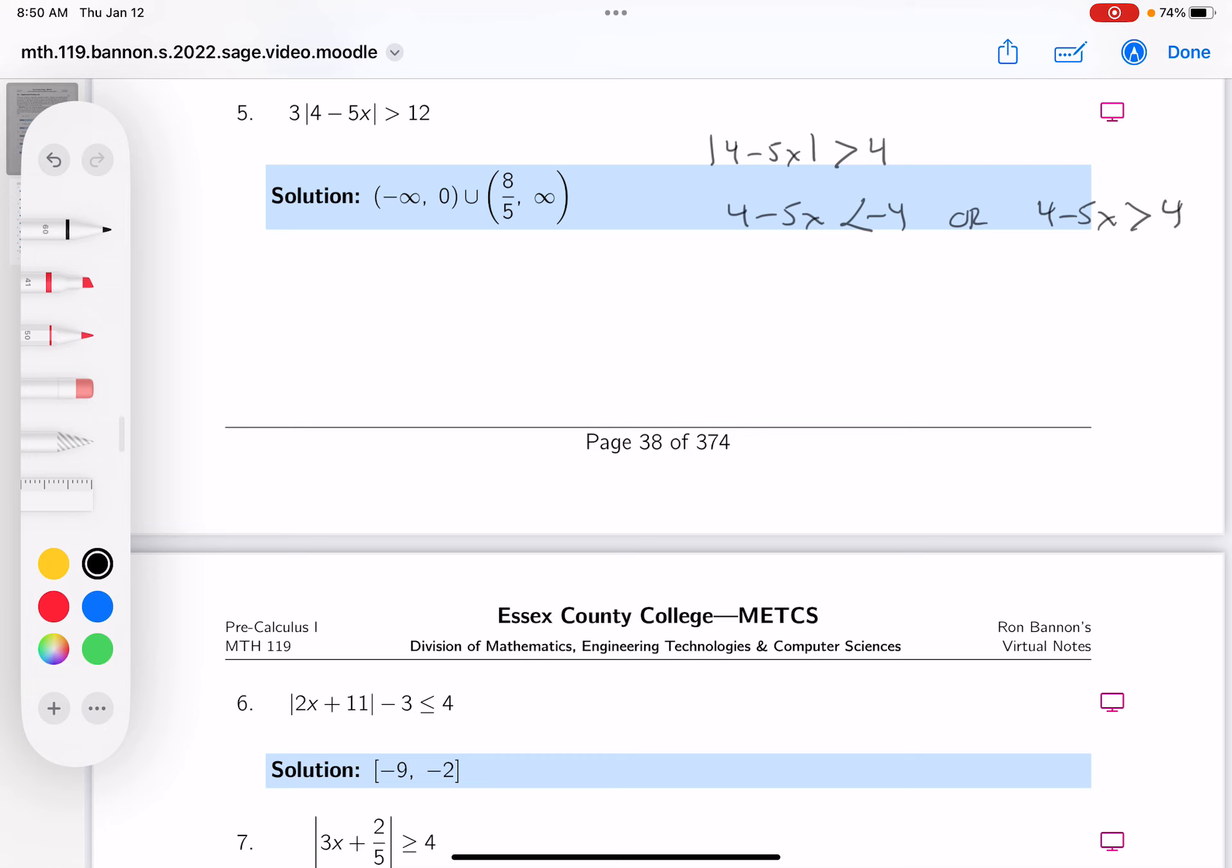These are two inequalities to solve, and solve them one at a time. The way I'm going to do it, I'm going to add 4 to both sides, and then add 5x to both sides. You get 8 equals 5x. I would divide both sides by 5, and you get this.